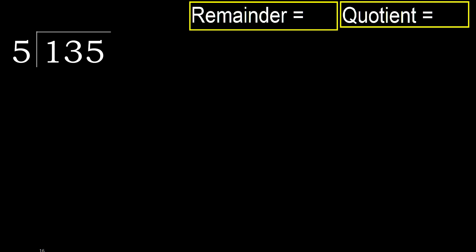135 divided by 5. 1 is less, therefore next. 13 is not less, therefore work with 13. 5 multiplied by which number is nearest to 13, but not greater.